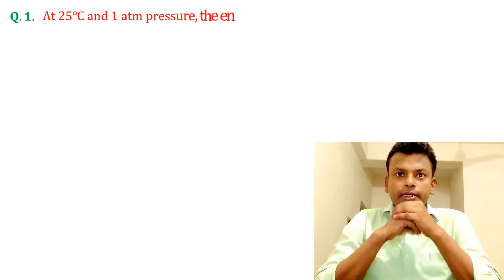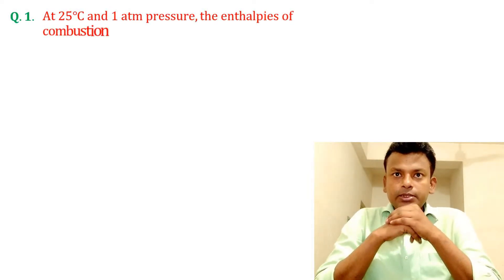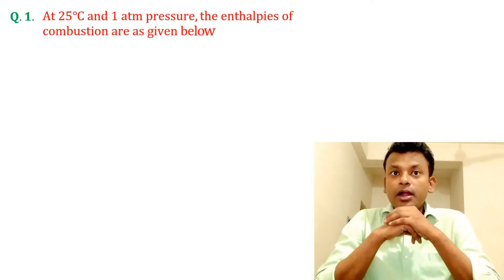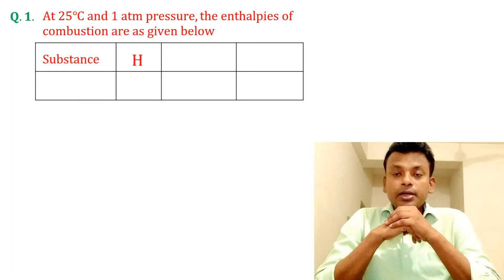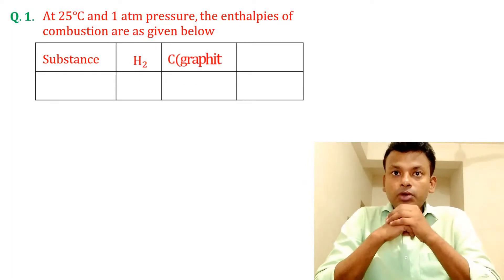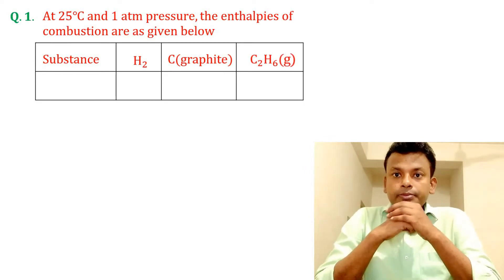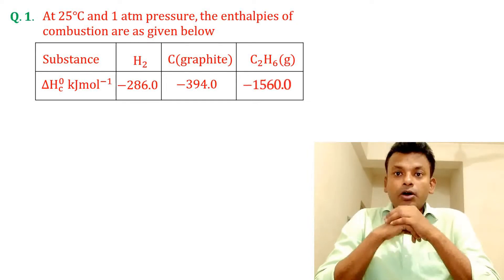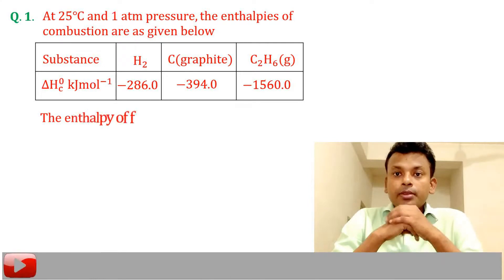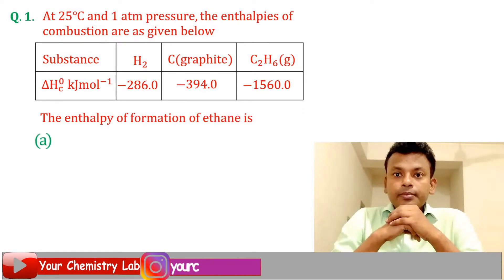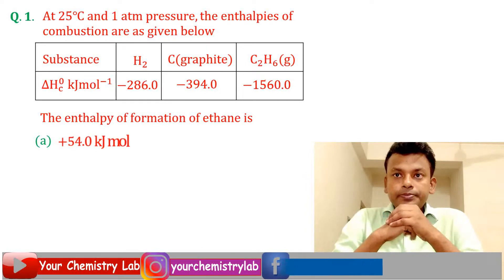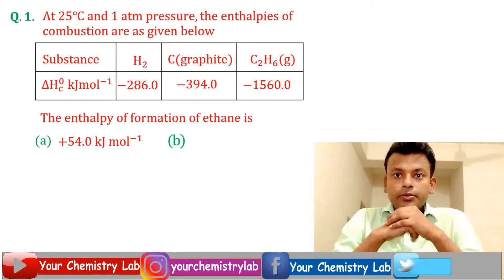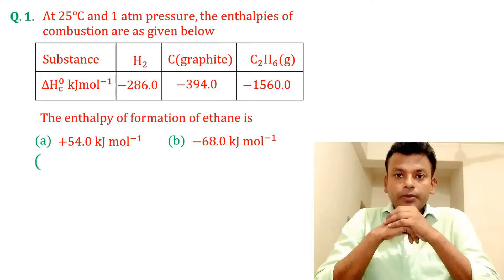Question 1. At 25 degree centigrade and 1 atm pressure, the enthalpies of combustion are given below. Substances: hydrogen, graphite, and C₂H₆ — values are given. The enthalpy of formation of ethane is: option A, option B, option C, and option D.